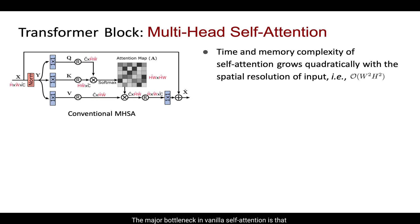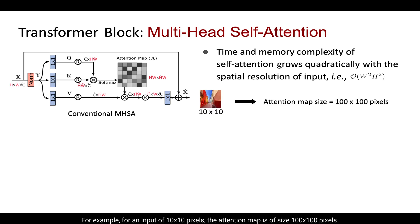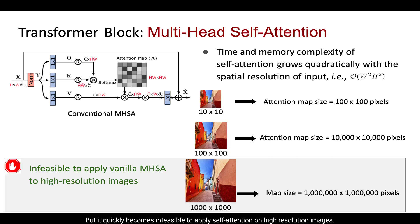The major bottleneck in vanilla self-attention is that its complexity grows quadratically with the spatial resolution of the input. For example, for an input of 10×10 pixels, the attention map is of size 100×100 pixels. It quickly becomes infeasible to apply self-attention on high-resolution images, and such large resolutions are very common in image restoration datasets.